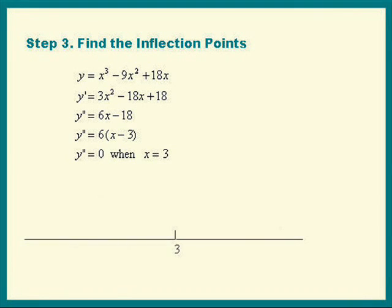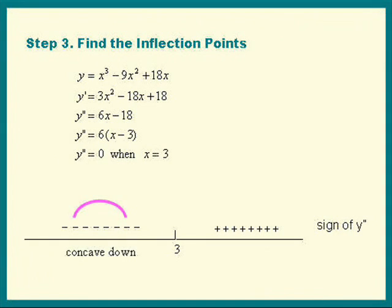So here's the line. Mark off the 3, and let's find the sign of the second derivative. On the left side, if x is less than 3, x minus 3 is negative. On the right side, x is bigger than 3, so x minus 3 is positive. The curve is concave down on the left side of 3, and concave up on the right side of 3.